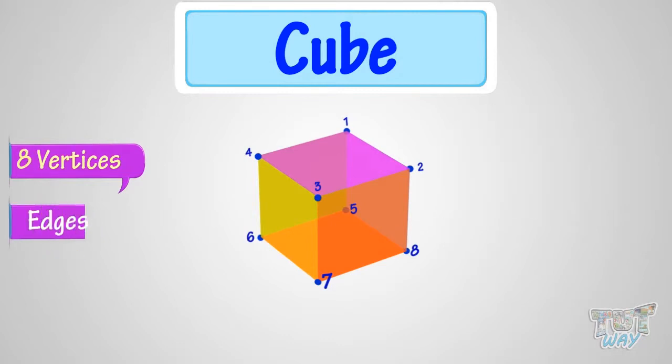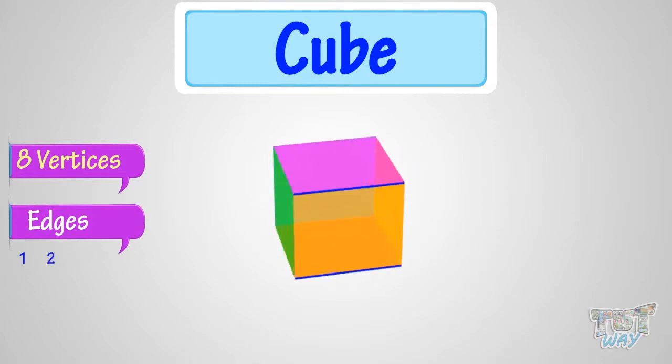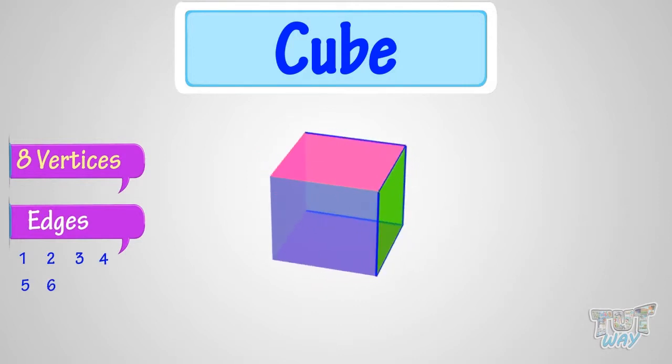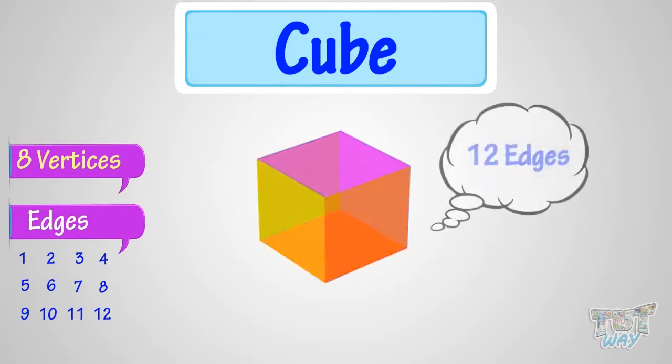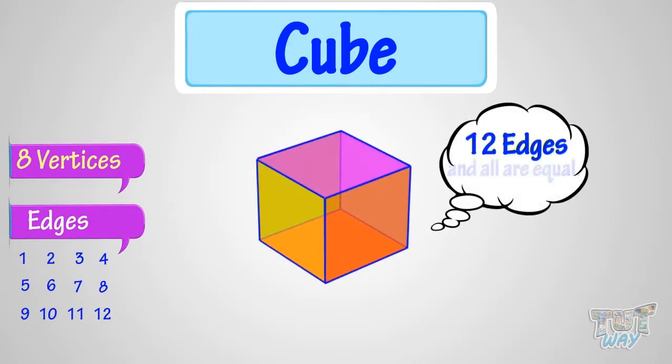Now let's count its edges. One, two, three, four, five, six, seven, eight, nine, ten, eleven, twelve. So, a cube has 12 edges and all are equal.